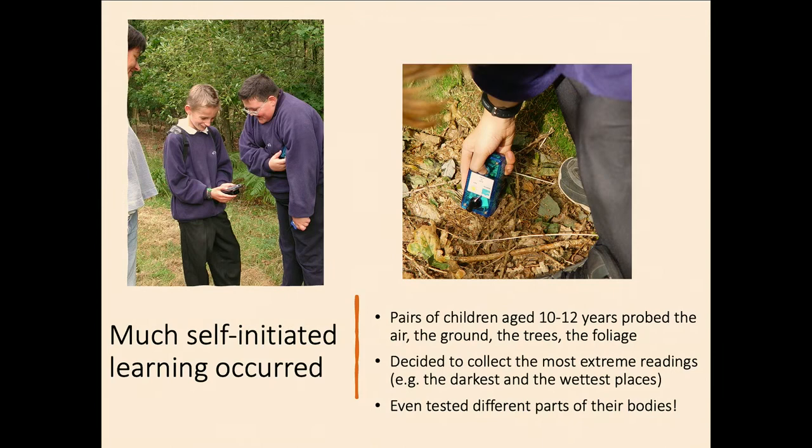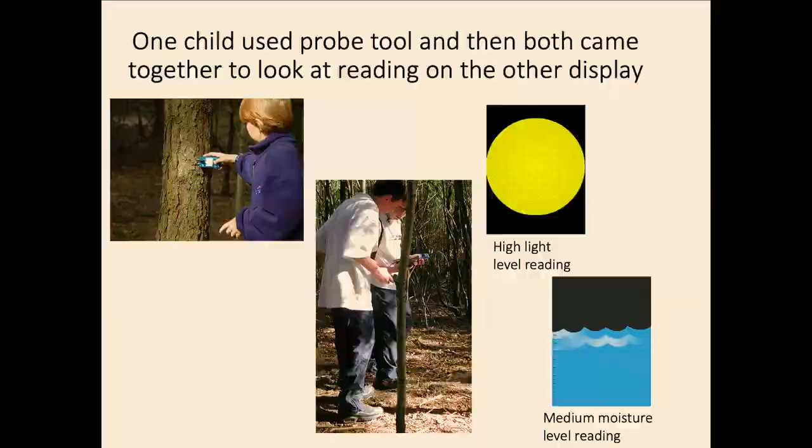We wanted children to think about things you take for granted or never really think about. We also had sounds for photosynthesis, to get them curious. When we let children aged 10 to 12 go out into this woodland, much self-initiated learning took place. We got them out in pairs so they could talk and collaborate. With the probing device, they probed everything — the air, the ground, the trees, and foliage. Kids being kids, they liked to find the most extreme: the wettest, the lightest, the darkest — and tested different parts of their own body too.